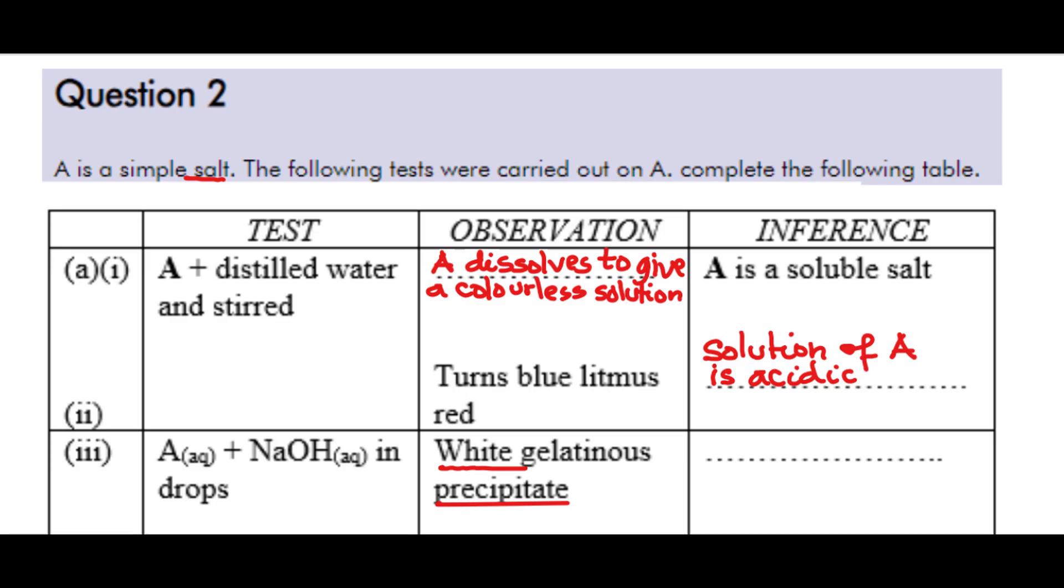AIII. The test is A aqueous, the solution obtained from the first test plus sodium hydroxide aqueous in drops. We are told that a white gelatinous precipitate is formed. For the fact that it is a gelatinous precipitate, it has disqualified one of the white ions which I mentioned earlier. That is lead ion. So only zinc and aluminum ions will give us white gelatinous precipitate.